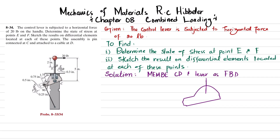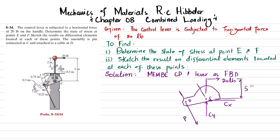This is the lever where a 20-pound force is applied. The distance from the handle to point C is 5 inches. At point D, the cable force T acts downward. At pin C, there are reaction forces C_y in the y-direction and C_x in the x-direction. The distance between point D and point C is 0.75 plus 1.75, which equals 2.50 inches.